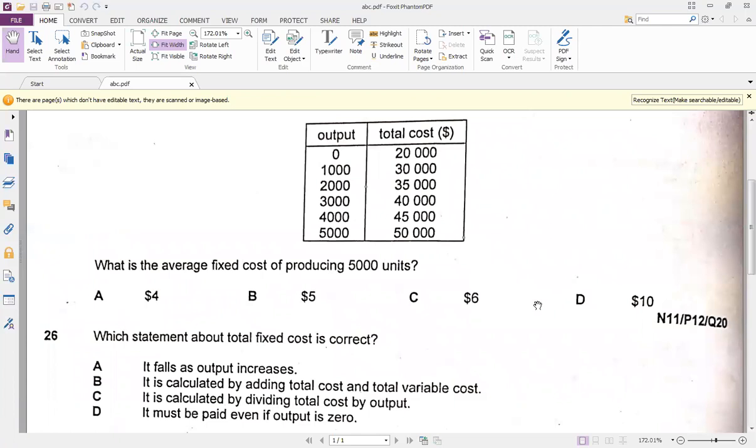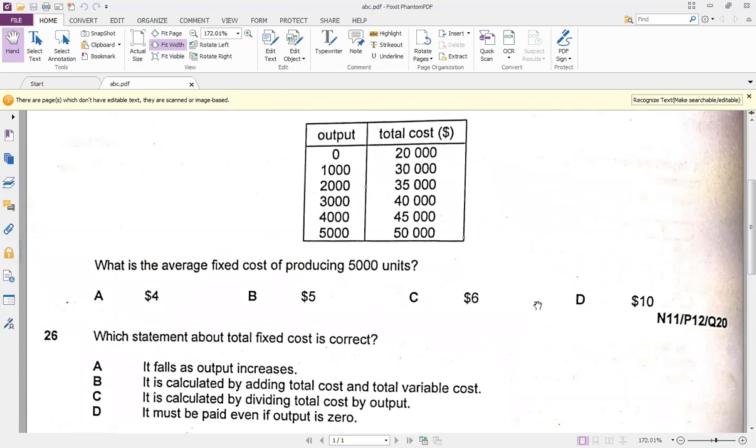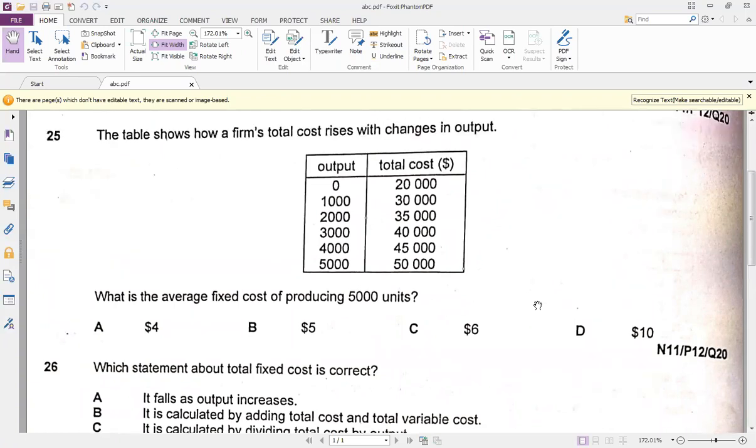If we closely see the table which we exercised last Friday, that clearly tells us that when your output was zero, your total cost was 100 in that table. As you could closely see, the fixed cost was also 100. Does that mean that when the output is zero, the total cost and the fixed cost both are going to be equal? Yes, truly like that.